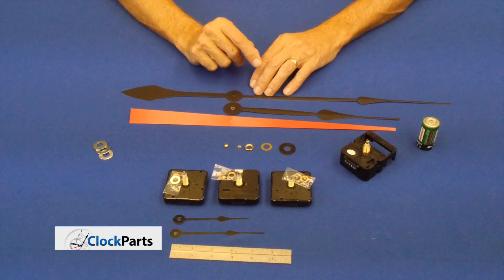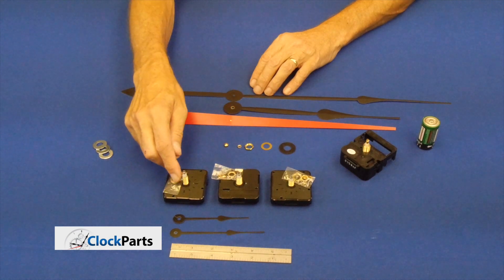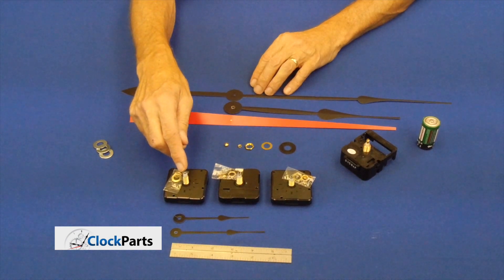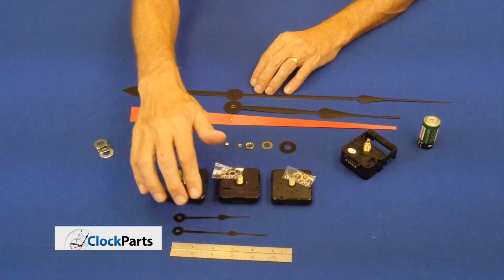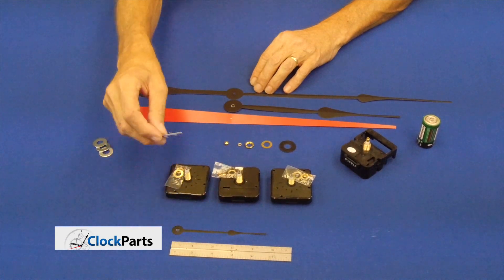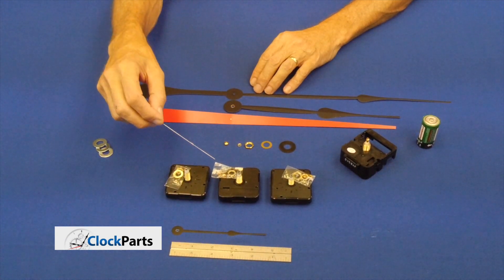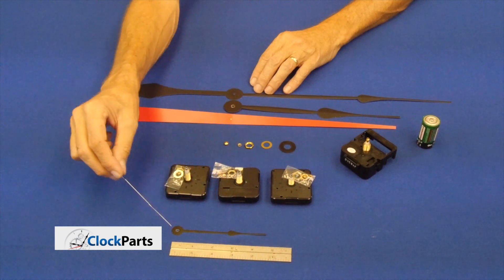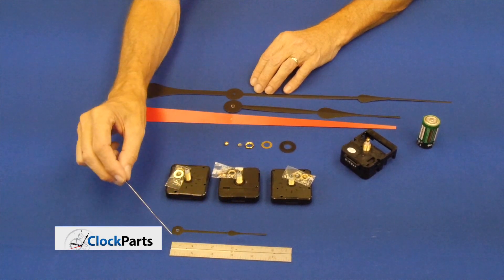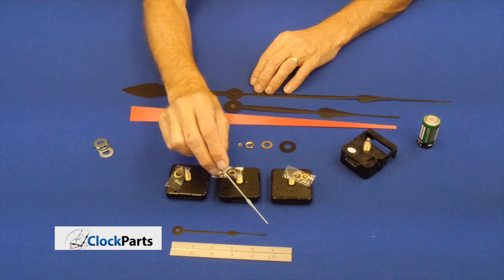One is how long are your clock hands, and another one is how long is the hand shaft. When we look at measuring the length of your clock hands, we are not concerned with the hour hand. We're only concerned with the longer one, the minute hand, and we measure from the mounting hole to the tip.